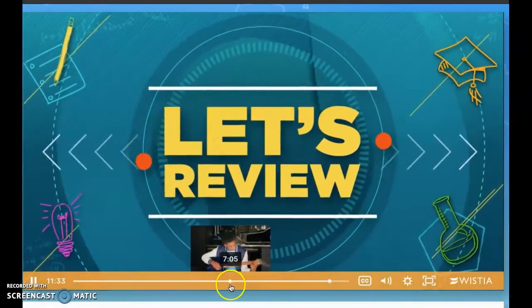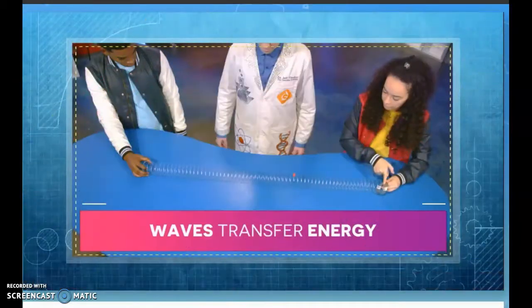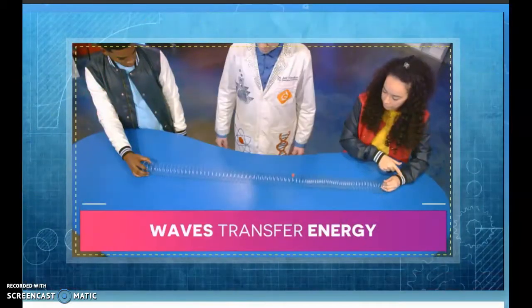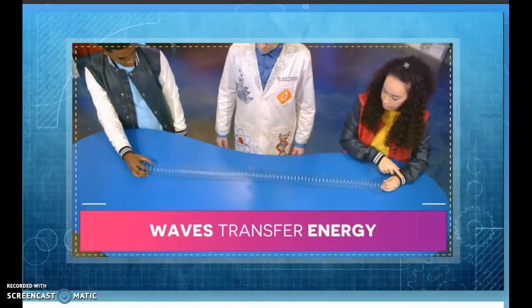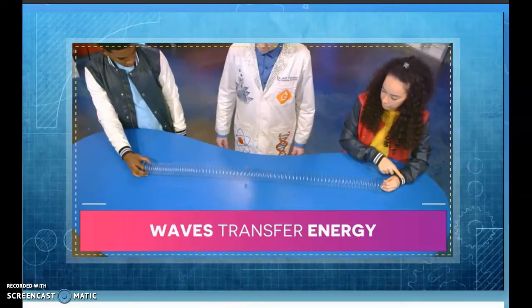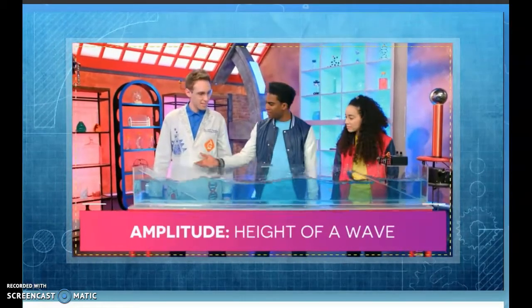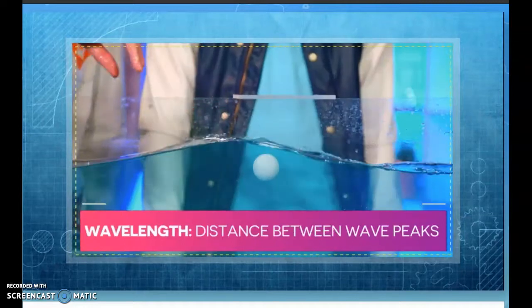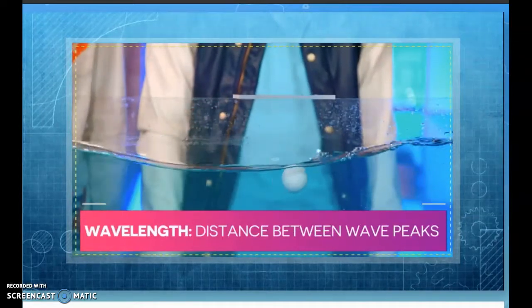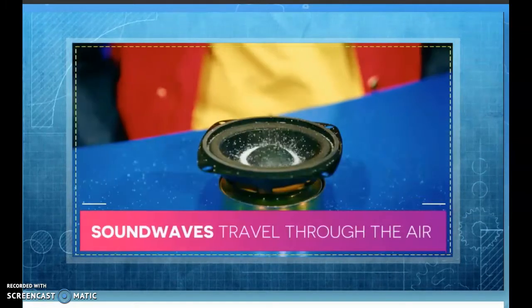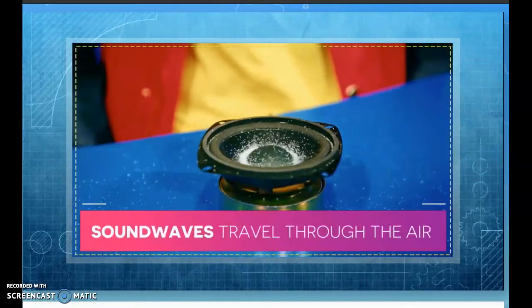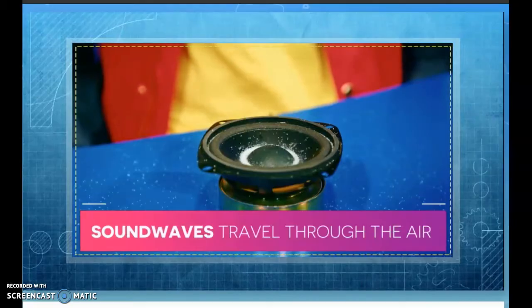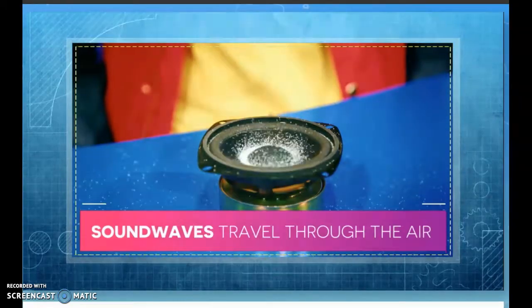Let's review. Today we learned that waves are one way energy is moved from place to place. Amplitude is the height of the wave, and wavelength is the distance between the wave peaks. And the sound we hear is a type of wave that travels through the air.